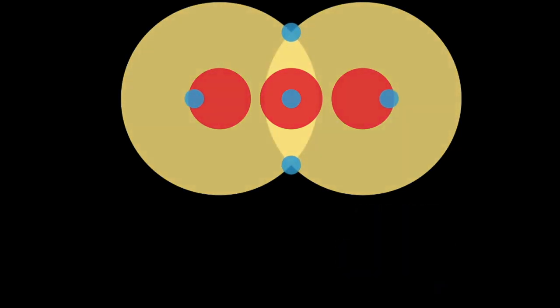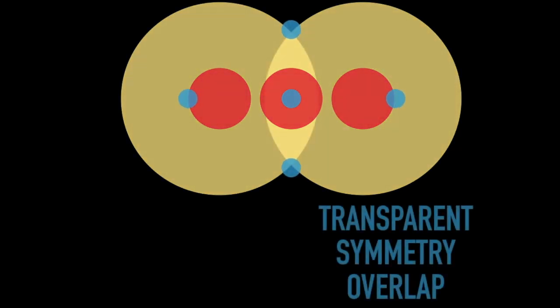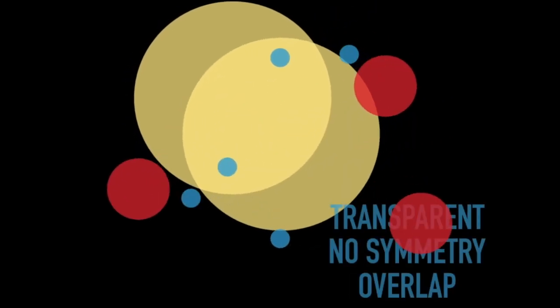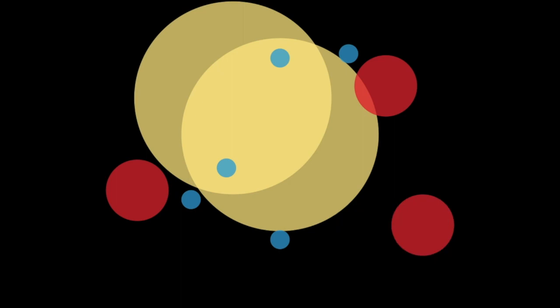This is the same arrangement, but instead of opaque shapes, they're transparent — we can see through them. This effect can be painted easily with watercolors. Does this composition look familiar? It's actually very close to the image we started with.